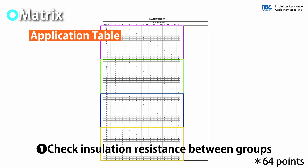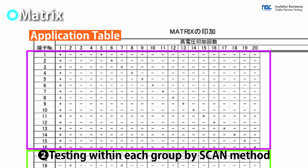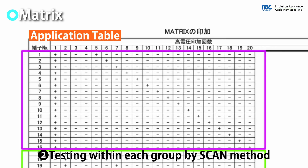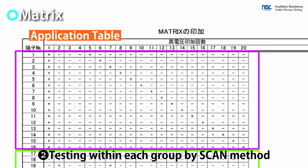In the matrix method, the circuits are automatically divided into groups and then the voltage is applied. After that, the circuits in the group are tested by the scan method.